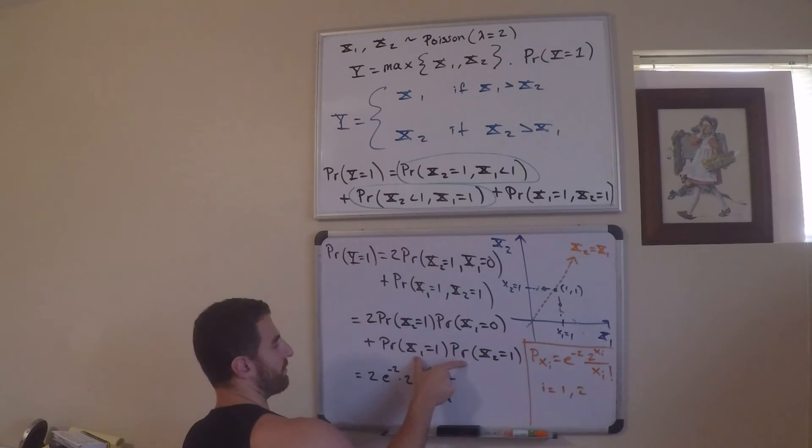Plus, now I'm dealing with the case where they're both 1. So, this is going to be, well, I'm just going to square it. I mean, this is the same value. I'm just going to square it. So, this is equal to e to the negative 2 times 2 squared.